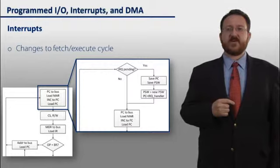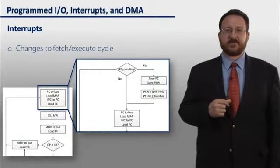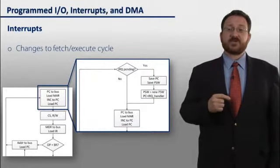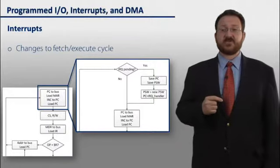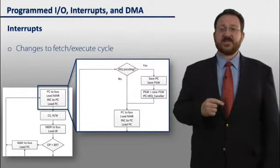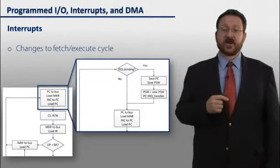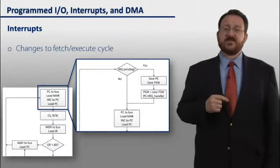Here's a picture of the way this works, the way we would have to change the fetch and execute cycle. We replace the portion at the beginning where we're fetching the next instruction with a question: Is there any IO pending? Is there an IRQ line that's set high? If so, then we'll save the program counter and the program status word to a special location in memory.